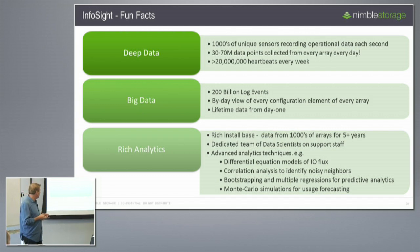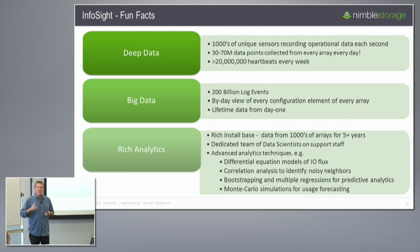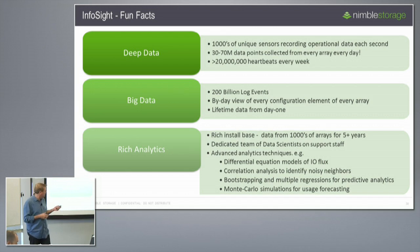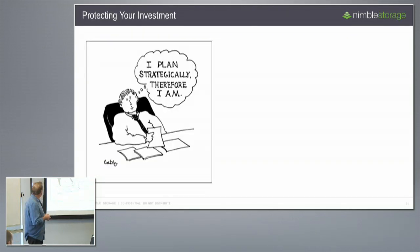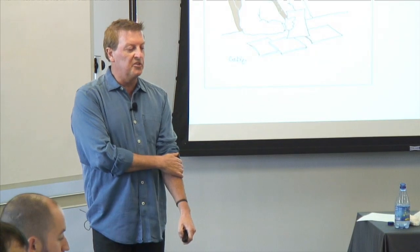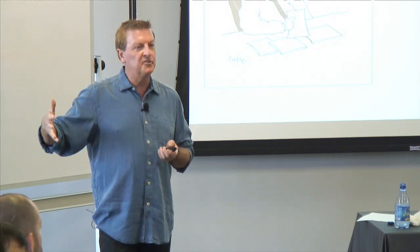We have data from thousands of arrays going back as far as five years, a dedicated team of data scientists, and a lot of very interesting data analytics techniques. I've listed a few here: some differential equations to model IO flux so we can understand where there are certain latencies and outliers to understand why that's happening on certain arrays; lots of things around multiple regression analysis for predictive analytics on how things are growing or changing over time.